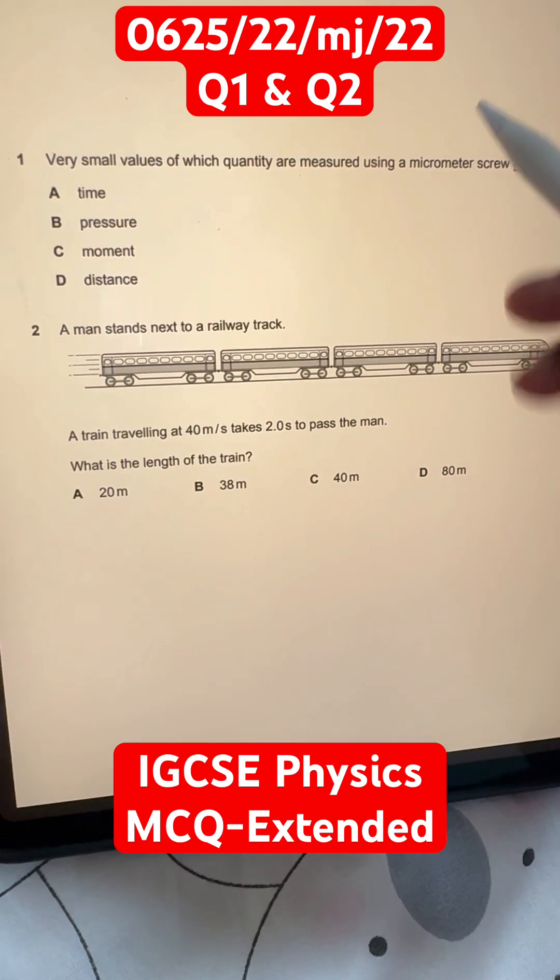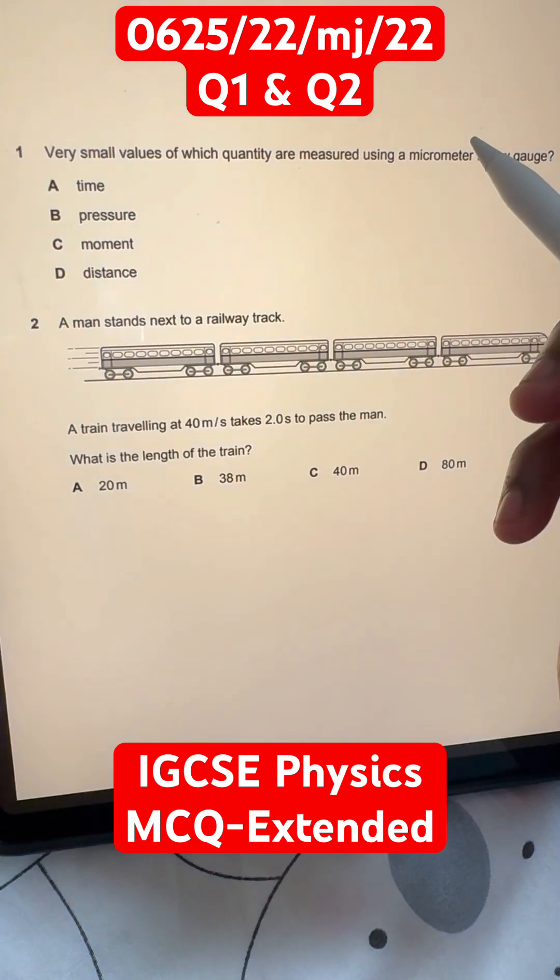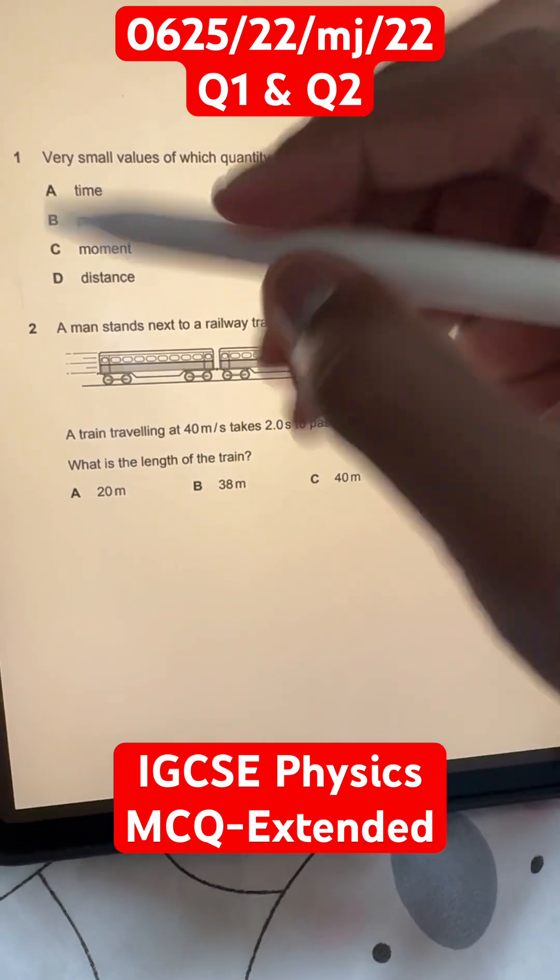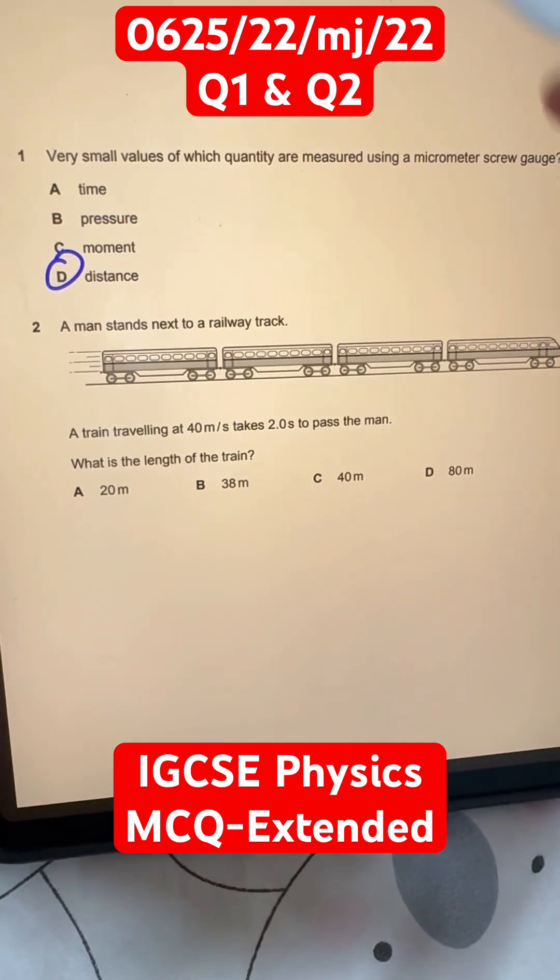which is option D. Also, in the name of micrometer screw gauge, there is micrometer, which is a unit of distance. So, D is our answer.